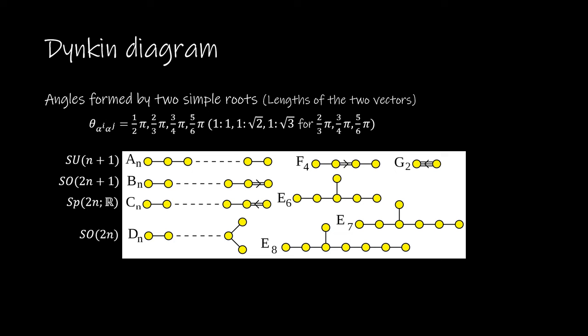In other words, the root of the Lie algebra is determined by the simple root. The only angles formed by two simple roots are pi over 2, 2 pi over 3, 3 pi over 4, and 5 pi over 6.